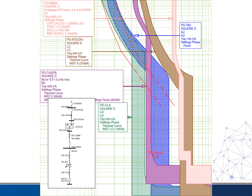Here's an example from a coordination study. You can see a feeder path through the system, starting with the main circuit breaker — MSB — going through the main circuit board, through the transfer switch, through a different panel, through the transformer, another breaker, and down to the panel at the bottom.